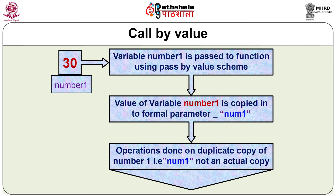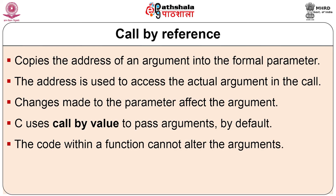The flow diagram for call by value shows: number1 was declared as 30. The variable number1 is passed to a function using pass-by-value, so the value of number1 is copied into the formal parameter. Operations are done on the duplicate copy of number1, not on the actual original copy.